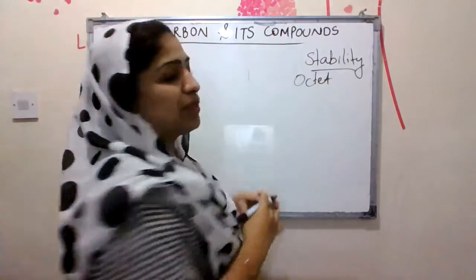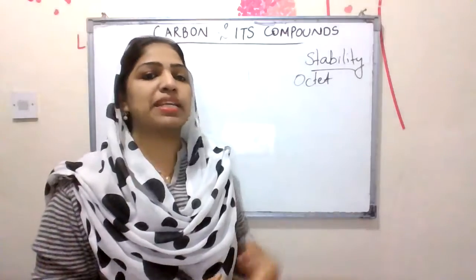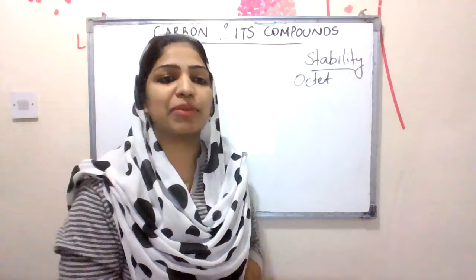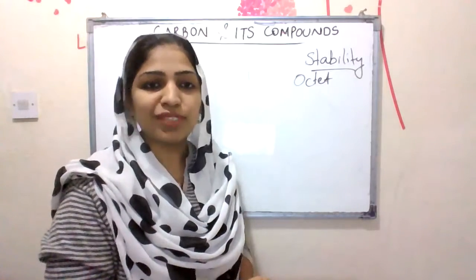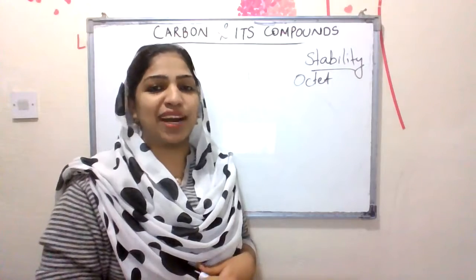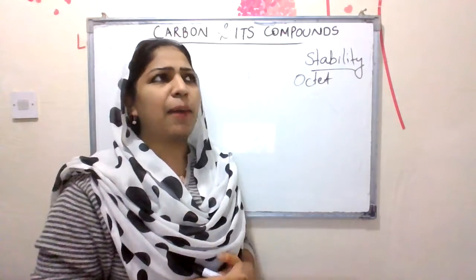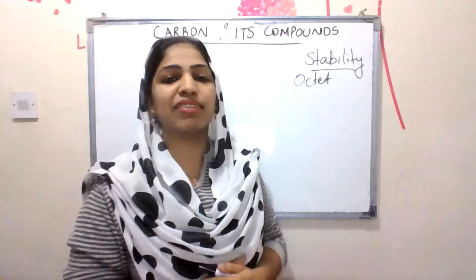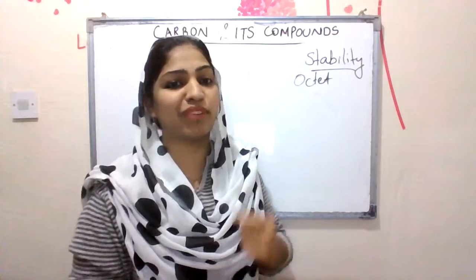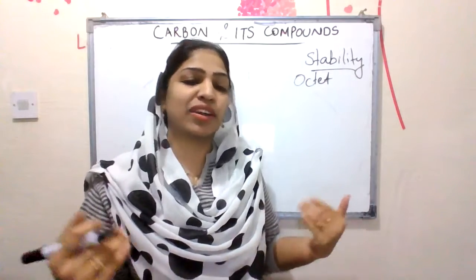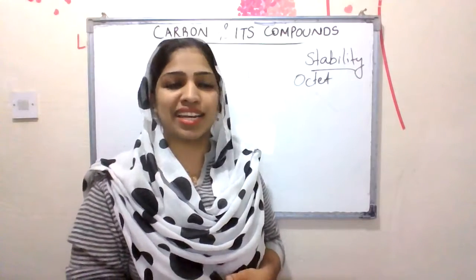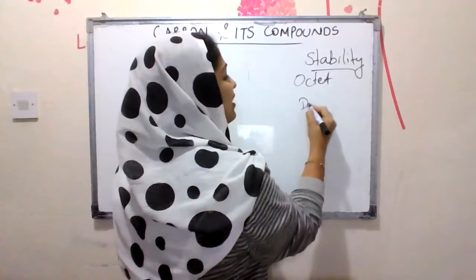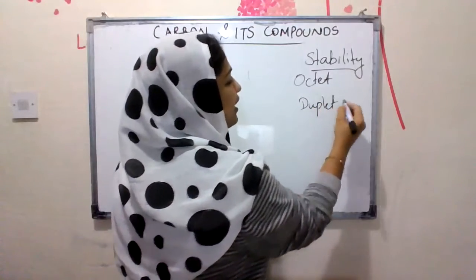Octet completion: if you want to say, octet completion means elements in the outermost shell are stable. When elements have eight electrons in their outermost shell, they will become very stable. For hydrogen and helium, these are smaller elements. The K shell capacity is maximum, and this completion is called duplet completion.